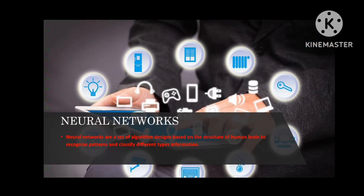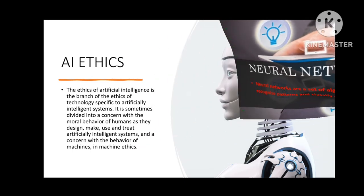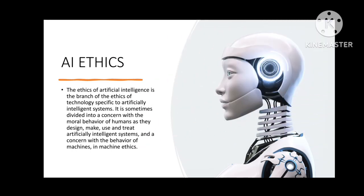The last topic in fields of AI is neural networks. Neural networks are a set of algorithms based on the structure of the human brain to recognize patterns and classify different types of information. Now the important part of AI is AI ethics. The ethics of AI is the branch of ethics specific to artificially intelligent systems, sometimes divided into the model behavior of humans as they design, make use of, and treat artificially intelligent systems.